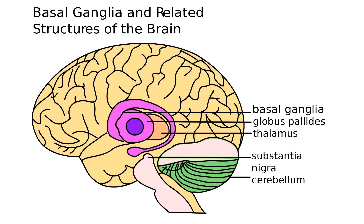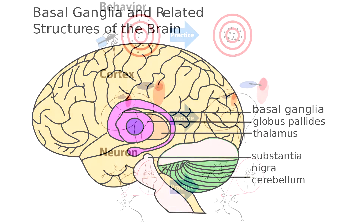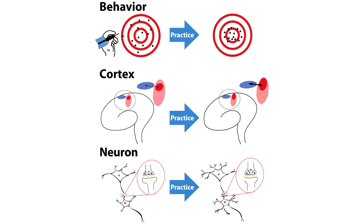The basal ganglia and cerebellum are important for support to the upper motor neurons in the cortex, and for regulation and control of movements.